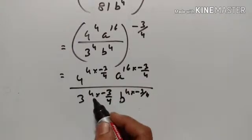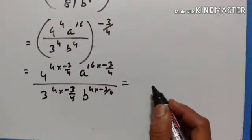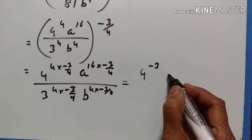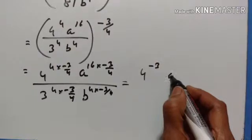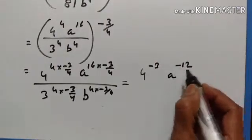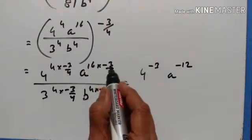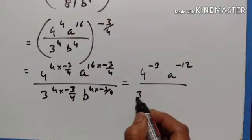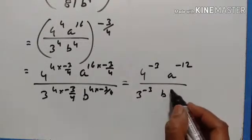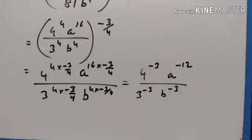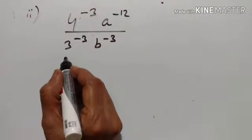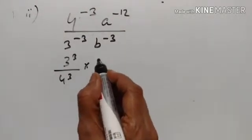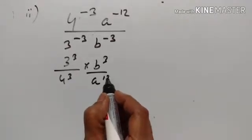The 4s cancel out, leaving 4 to the power of minus 3. Here 4 into 4 gives 16; a is to the power of minus 12 (4 into minus 3 is minus 12). Upon 4: the 4 cancels, giving 3 raised to the power of minus 3, b raised to the power of minus 3. This becomes 3 cube upon 4 cube into b cube upon a raised to the power of 12.